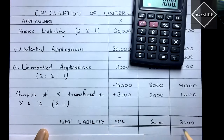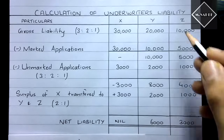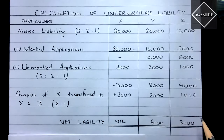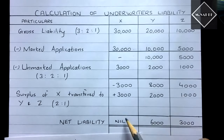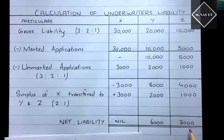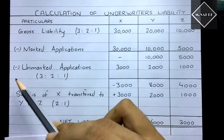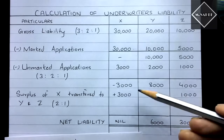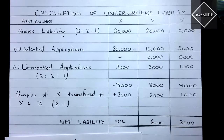The net liability results: Y must purchase 6,000 shares and Z must purchase 3,000 shares from their own pocket. X has no liability — his obligation is fully met. To summarize: calculate gross liability, subtract marked applications, subtract unmarked applications distributed in gross liability ratio, transfer any surplus to remaining underwriters, and you get the net liability. That's how to calculate underwriters' liability.